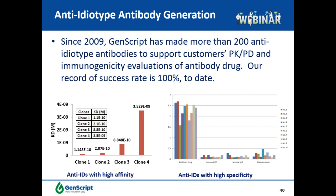Anti-idiotype antibodies are must-have tools for antibody drug discovery. Since 2009, GenScript has specialized in making anti-idiotype antibodies to support customers' PK, PD, and immunogenicity evaluations of antibody drugs. Our success rate is 100% with more than 200 projects. Anti-idiotype antibodies show high affinity with KDs in the subnanomolar range and high specificity, recognizing the antibody drug but not isotype controls or total IgG in human serum. Monoclonal anti-idiotype antibodies are used for PK studies, and polyclonal anti-idiotype antibodies are used as positive controls for immunogenicity studies.